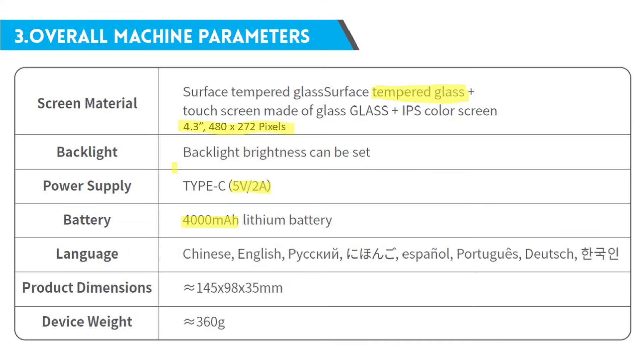Let's look at the specs and see what's notable. First, it's got a nice large touchscreen, 4.3 inches with resolution of 480 by 272, and it has a tempered glass screen so hopefully it's durable. The power supply is USB-C 5 volts 2 amps. Unfortunately it doesn't have USB-C PD or fast charging. It's got a huge battery, 4,000 milliamp hour, to power the large screen. Good range of languages.